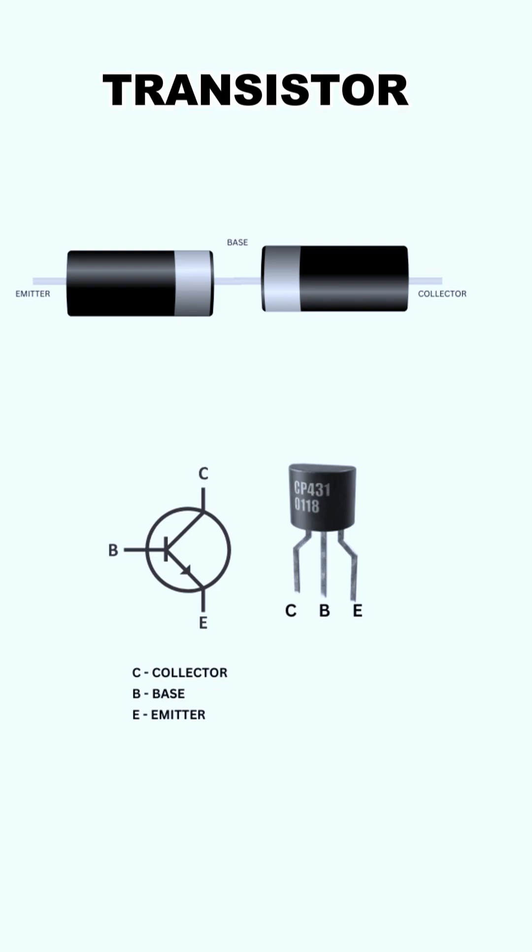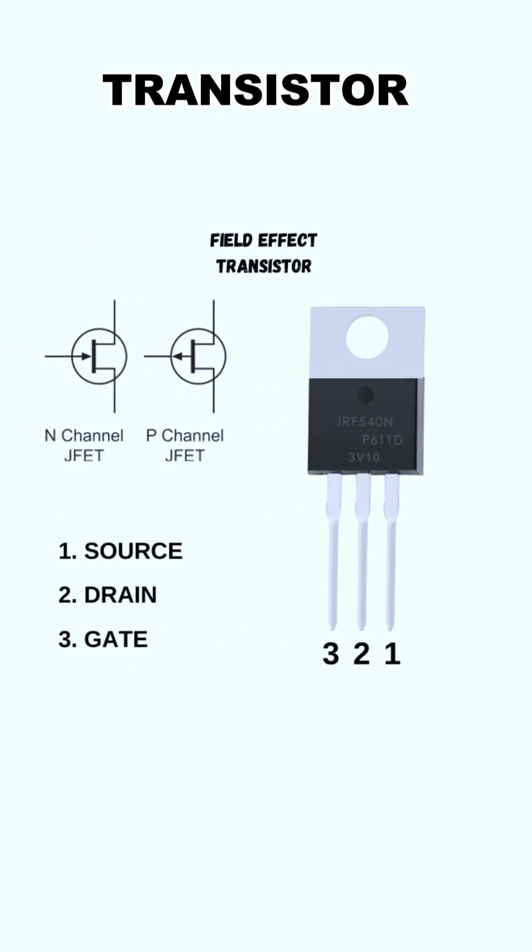2. Field Effect Transistor. A field effect transistor, shortly termed as FET, is a voltage-controlled device, unlike BJT which is a current-controlled device. The FET is a unipolar device, meaning it is made using either P-type or N-type material as the main substrate.